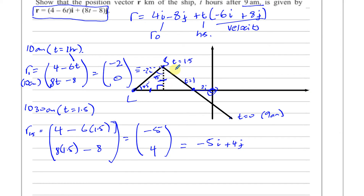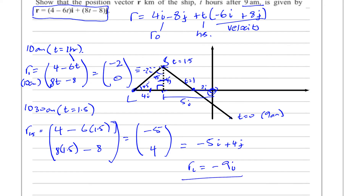The position vector of the ship at 1.5 hours is minus 5i plus 4j. From the origin to the ship horizontally is 5 units, and vertically is 4 units. Since the triangle is isosceles, the horizontal leg from the lighthouse to directly below the ship must equal 4 units. So the lighthouse is at minus 5 minus 4 which is minus 9 in the i direction. The position vector of the lighthouse is minus 9i.